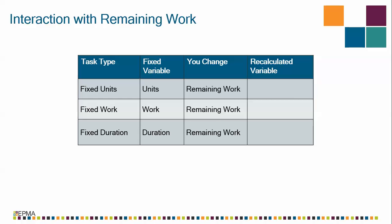On a fixed units task, the units value is locked. If you change the remaining work, what you're actually changing is the total amount of work — the work field. So on a fixed units task, the units value is locked; if you change remaining work, you're changing work. So what number must be recalculated? It has to be duration. Why? It's the only number left.